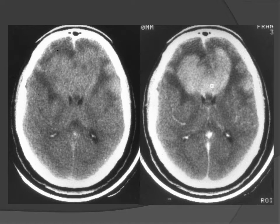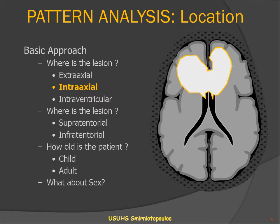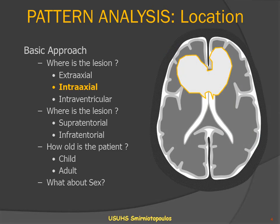Here we have, on these two CT scans, an example of a classic butterfly lesion. The non-contrast CT scan shows a fluffy, relatively homogeneous lesion of abnormally increased attenuation with some surrounding vasogenic edema. The same lesion demonstrates contrast enhancement. In the basic approach to the lesion location, we can identify that this is intraaxial and it is within the corpus callosum, spreading from one side to the other.